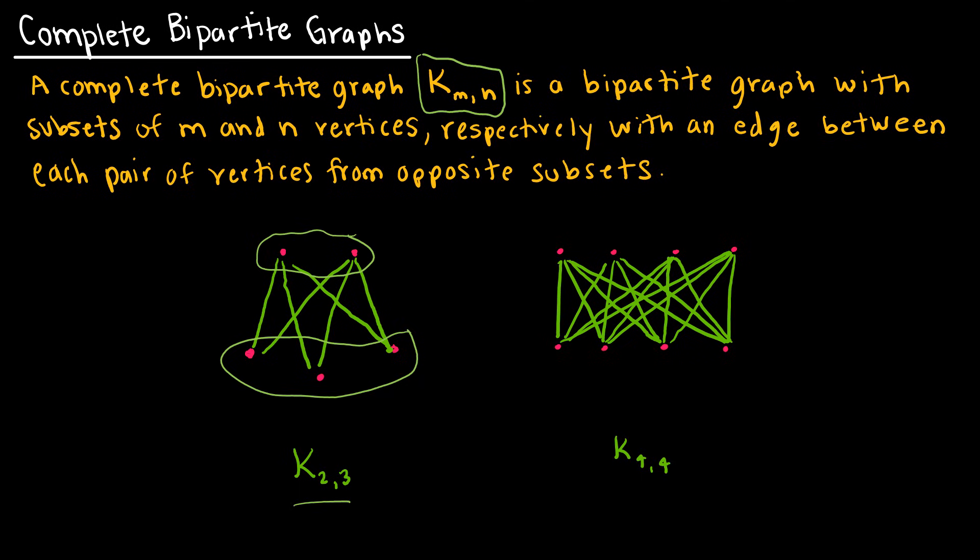This would be K4,4 because there's four here and four here. It's a complete graph because each of the four in one set is connected to each of the four in the opposite set. But none in this set are connected to one another, and none in this set are connected to one another.